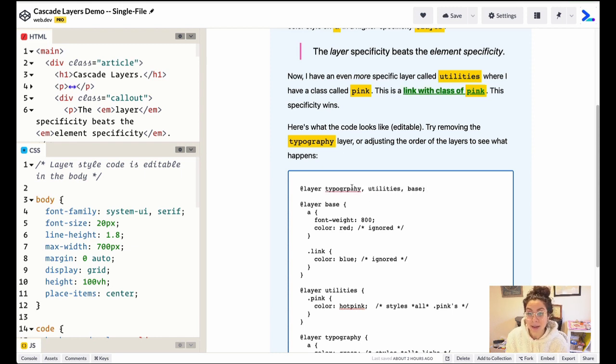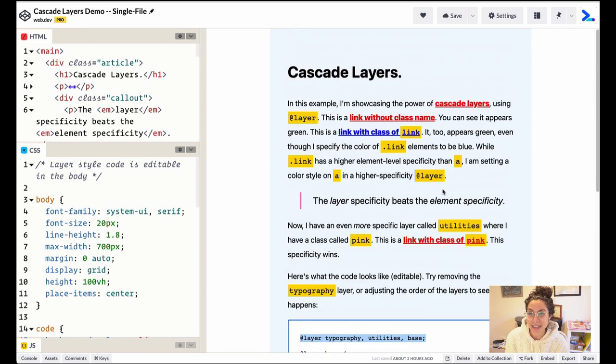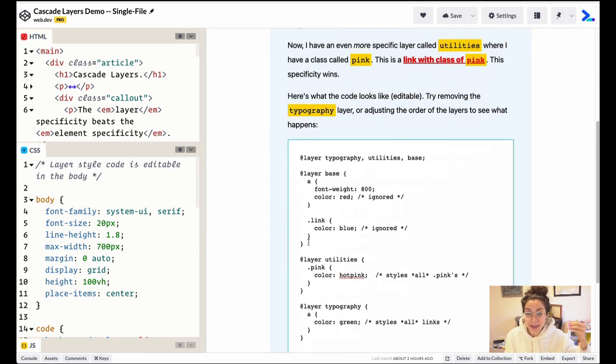So now we have a typography layer, then utilities, then base. And you see here now we have these red and blue links because now base is taking precedence over the rest of the layers.